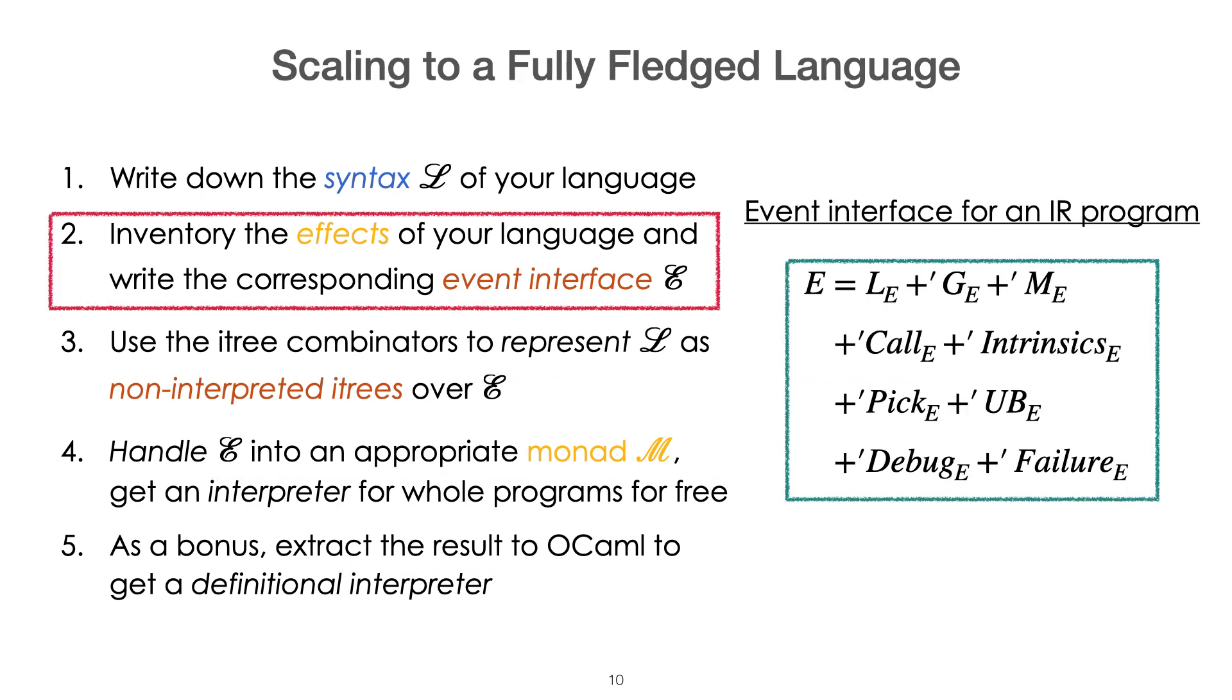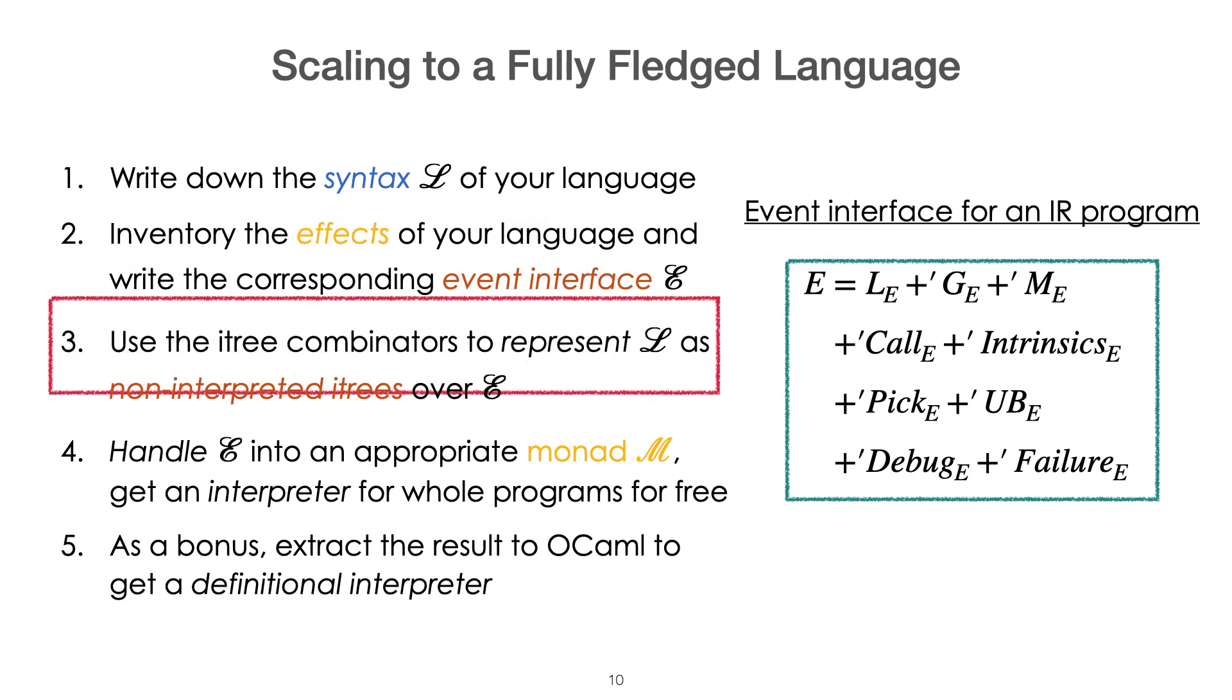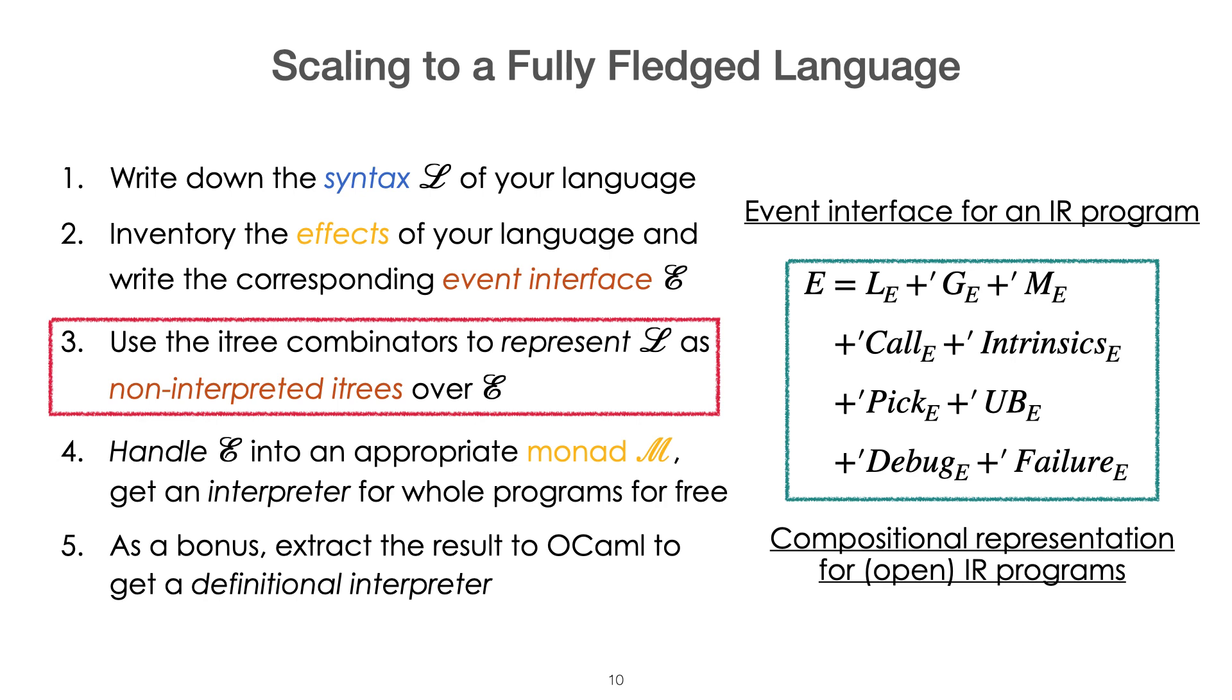Now, one of the messages of this paper is that this simple recipe essentially scales. In the case of LLVM IR, inventorying the effect leads to this signature made of 9 domains of events, and for instance, behind this ME is hidden all the interactions with the memory model. I will not be able to describe how we represent the syntax as one of these trees, all the details are in the paper if you are interested, but the message is that these combinators are expressive enough that you actually are able to do the whole job.